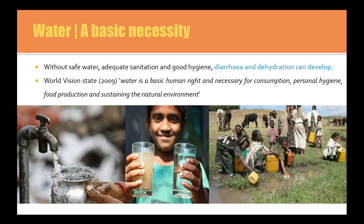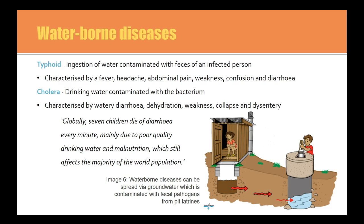There are a number of nutritional consequences for food shortages. When we talk about food, we also talk about water. Safe drinking water is really important. Without it, you don't have adequate sanitation or good hygiene, and that can result in dehydration or diarrhoea from waterborne illnesses. The main waterborne illnesses that particularly third world countries have to deal with are typhoid and cholera.